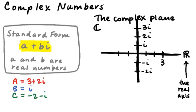For point A, three plus two i: go to three on the real axis and up to two i. For point B, i is zero plus one i, so it's right there at one on the imaginary axis. And C, negative two minus i: go to negative two on the real axis and down one to negative i. When I took the CLEP myself, one question showed four points on the complex plane and asked which was negative two minus i — it was really easy, one of the easier questions on that test.